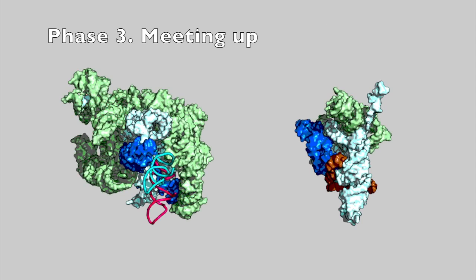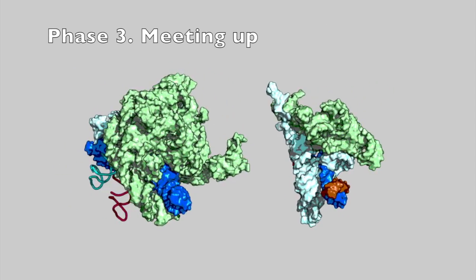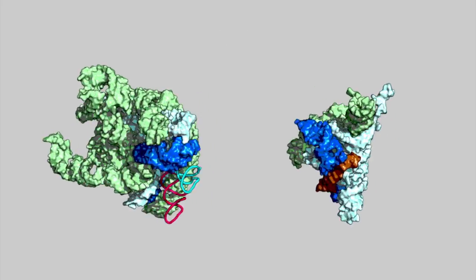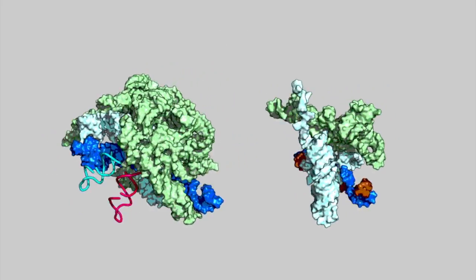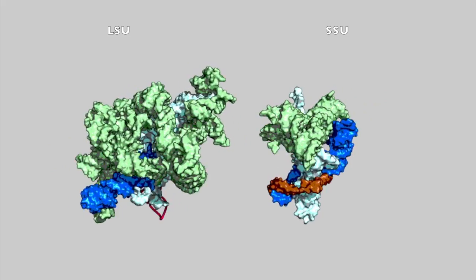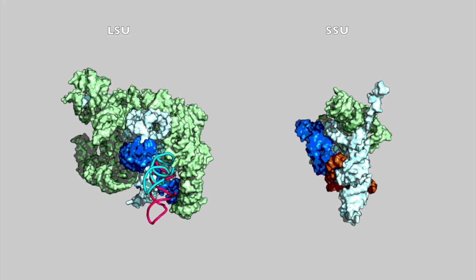In phase 3, the peptidyl transferase center is encased and rigidified, and the exit pore is extended into a short tunnel. The SSU termini dissociate with formation of the central pseudoknot. By the end of phase 3, the LSU and the SSU associate.